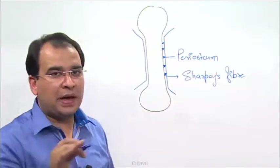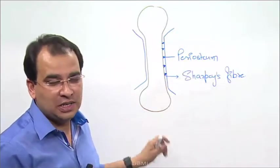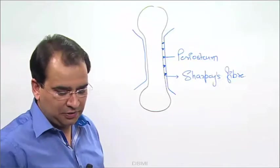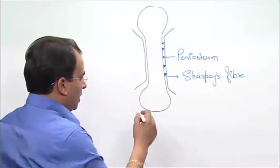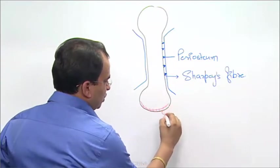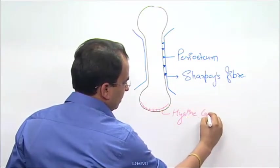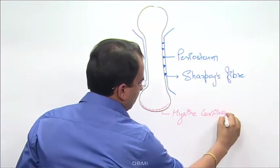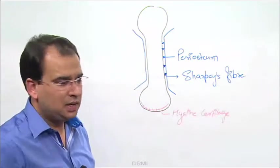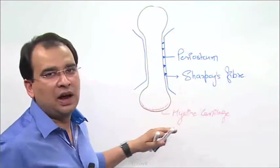Periosteum, one special thing about periosteum is you will not see periosteum covering the hyaline cartilage or the articular surface. So if this is a hyaline cartilage over here, you will not see periosteum covering the hyaline cartilage or the articular surface.